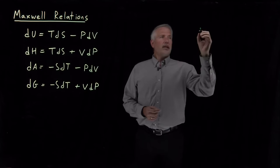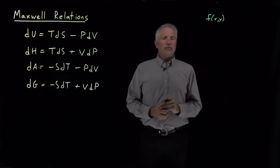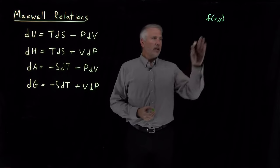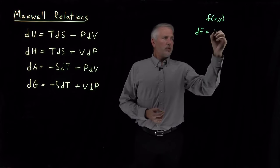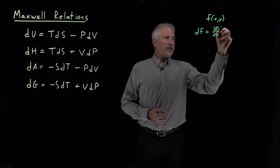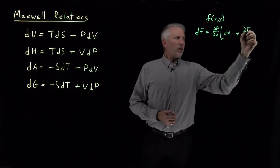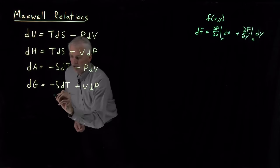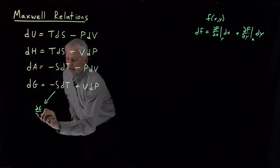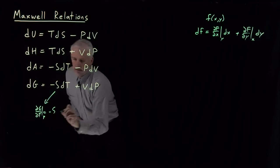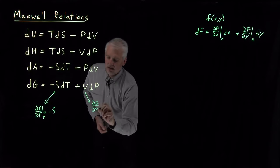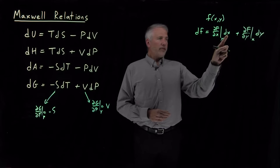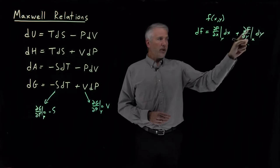Let me explain that by going back to the basic example of a two-dimensional function. If we think of these energies as functions of their natural variables — S and V, or T and P, or whichever — any function of two variables allows us to write the differential as df = (df/dx)dx + (df/dy)dy. That lets us say, for example, that dG/dT is negative S, and dG/dP is equal to V. We can read those derivatives off the coefficients: the coefficient in front of dx is the derivative with respect to x, and the coefficient in front of dy is the derivative with respect to y.